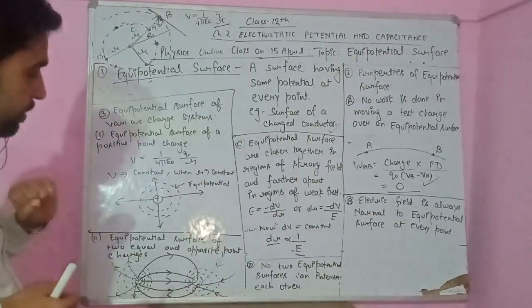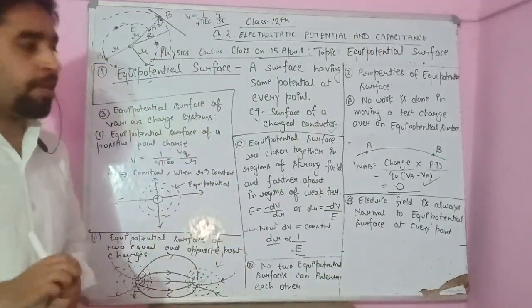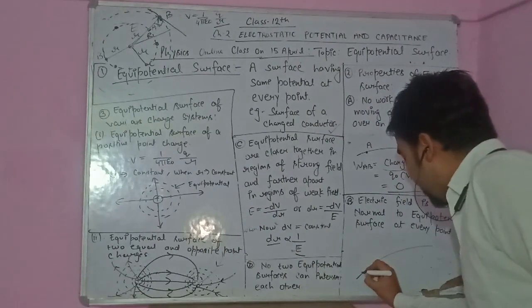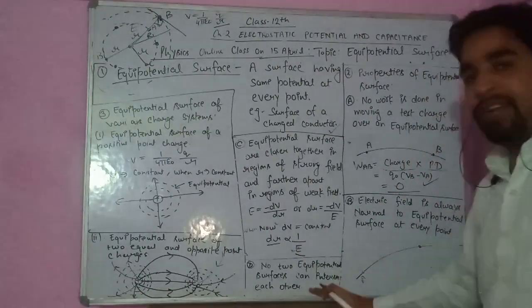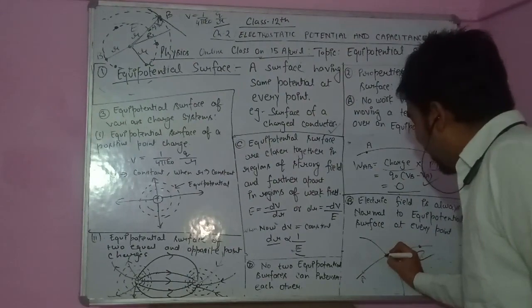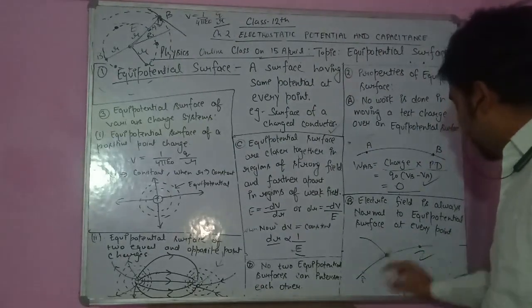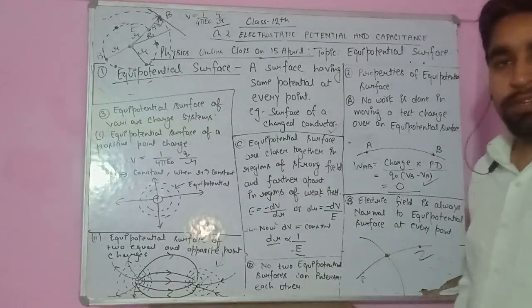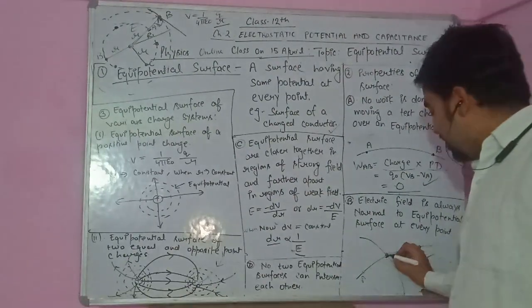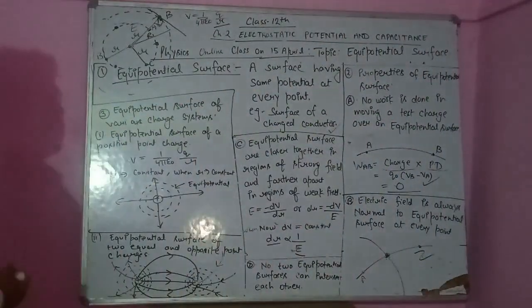The fourth property is that no two equipotential surfaces can intersect each other. Suppose two equipotential surfaces intersect. At the point of intersection, we cannot determine which potential value applies — whether it belongs to the first or second equipotential surface — creating a contradiction. That is why no two equipotential surfaces can ever intersect.